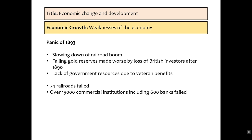The Panic of 1893 was caused by a slowing down of the railroad boom, falling gold reserves, Britain pulling out its investors in 1890, and a lack of government resources due to veteran benefits from the Civil War and the War with Spain. As a result, 74 railroads failed, and over 15,000 commercial institutions and 600 banks failed.